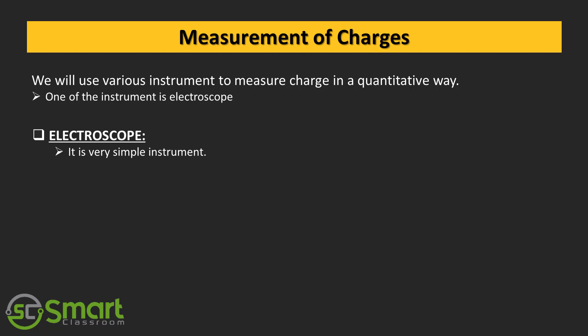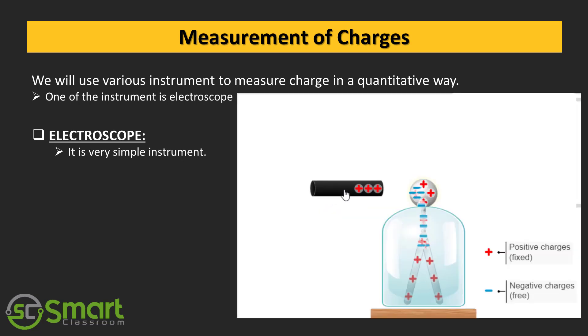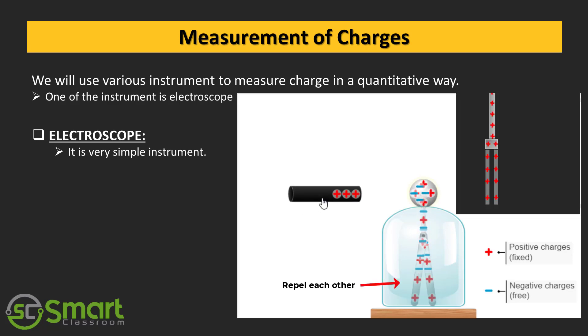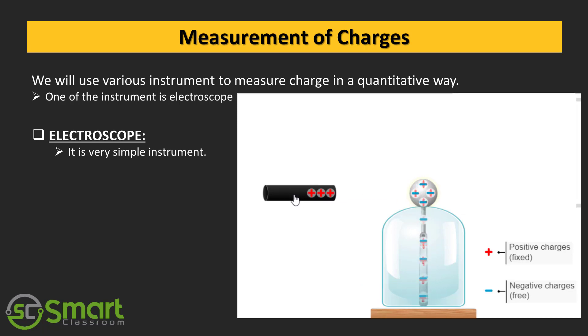Next topic: measurement of charge. We will use various instruments to measure charge in a quantitative way. One of the instrument is electroscope. Electroscope is a very simple instrument. It consists of a conducting rod made of aluminum. At the bottom end, two pieces of thin slits made of aluminum foil, and on the other side a nice knob. If I touch with a charged object, then because of that touch they can conduct charges. If I touch with a positive charge they will become positively charged. When I touch with a negative charge they will become negatively charged. You can see here two lightweight pieces of aluminum foil will repel each other. More charge on the thin cell, they repel more. This is the way of charge measurement in electroscope.